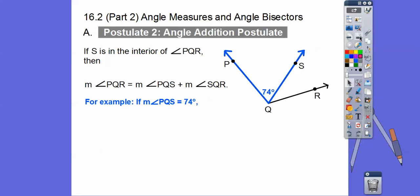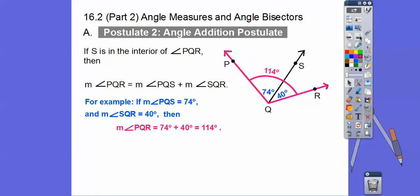Here's an example with some numbers. Let's say this is 74 degrees and this other angle is 40 degrees. Then the whole angle is going to be 74 plus 40, so 114. Sometimes they'll give you the whole angle — say it's 114 — and tell you that this angle is 74, so you'll use a little subtraction to get this angle right here.